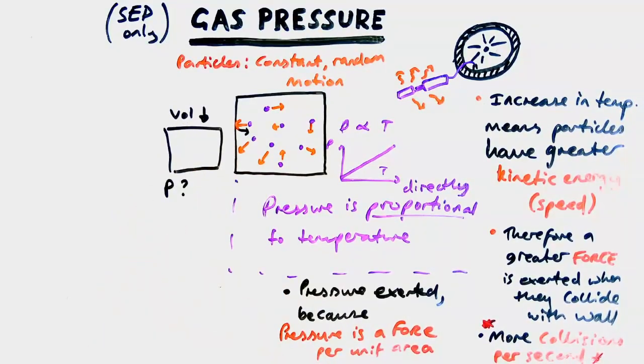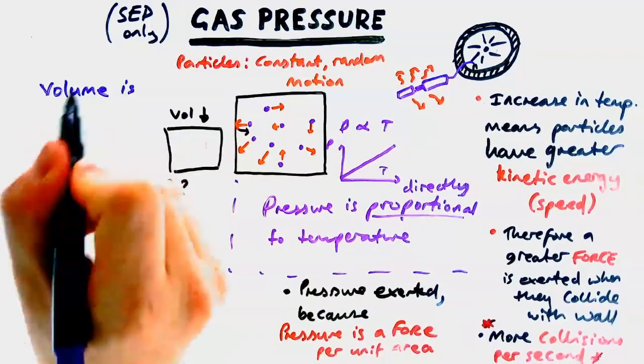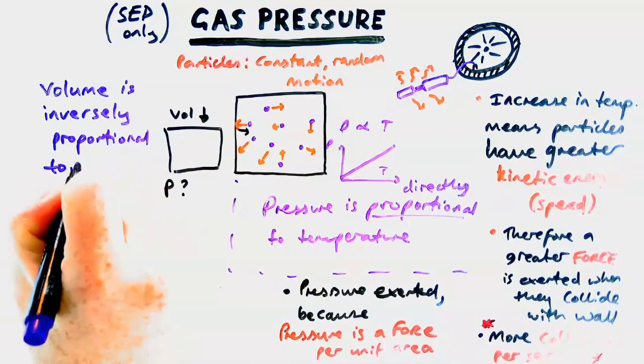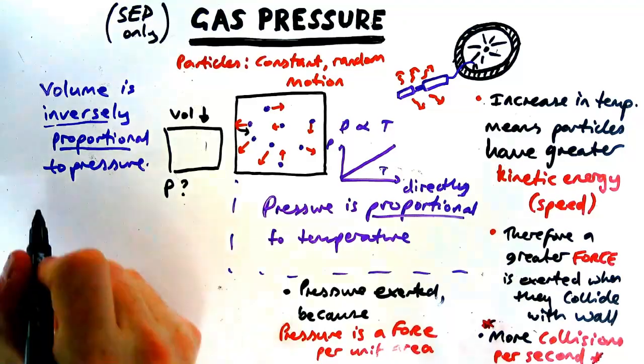So if the volume of the container goes down the pressure actually goes up. Now the relationship we say is what's called inversely proportional. So volume is inversely proportional to pressure. So it looks like that little proportional symbol and 1 over v.